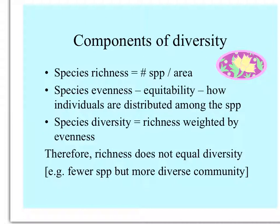Another important aspect of true diversity is evenness or equitability: how the individuals in that community are distributed among the species present. So species diversity is actually species richness weighted by evenness. Richness — the number of species — does not truly equal diversity, because you could have fewer species present but a more diverse community.